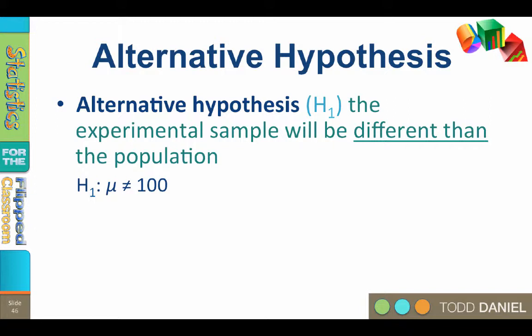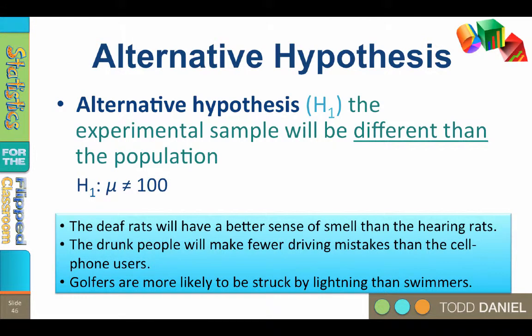Here are examples of ways that you could write an alternative hypothesis: The deaf rats will have a better sense of smell than the hearing rats. The drunk people will make fewer driving mistakes than the cell phone users. Golfers are more likely to be struck by lightning than swimmers.